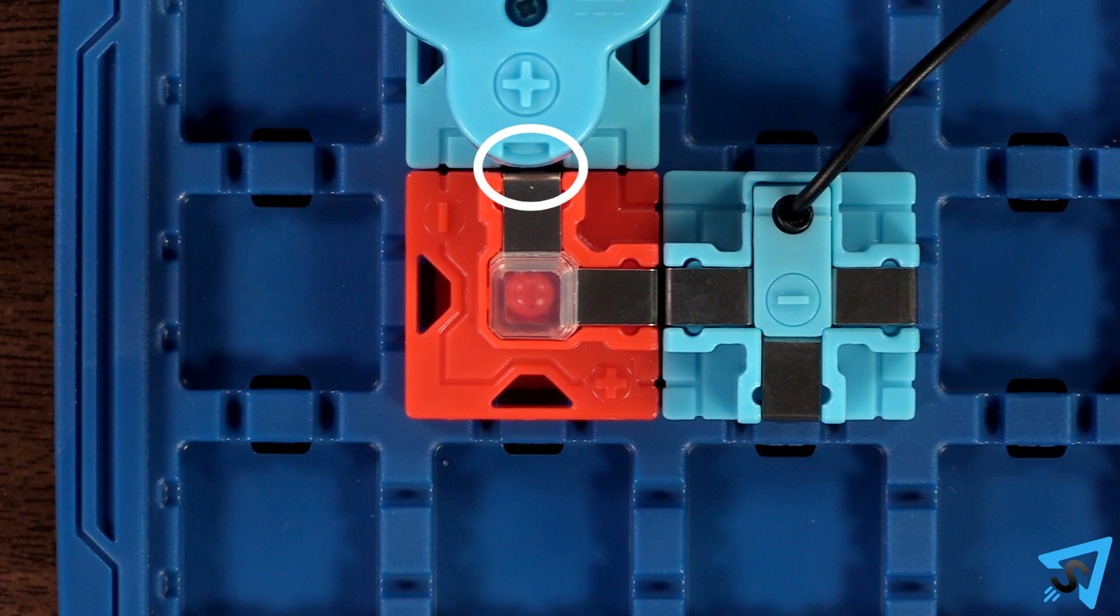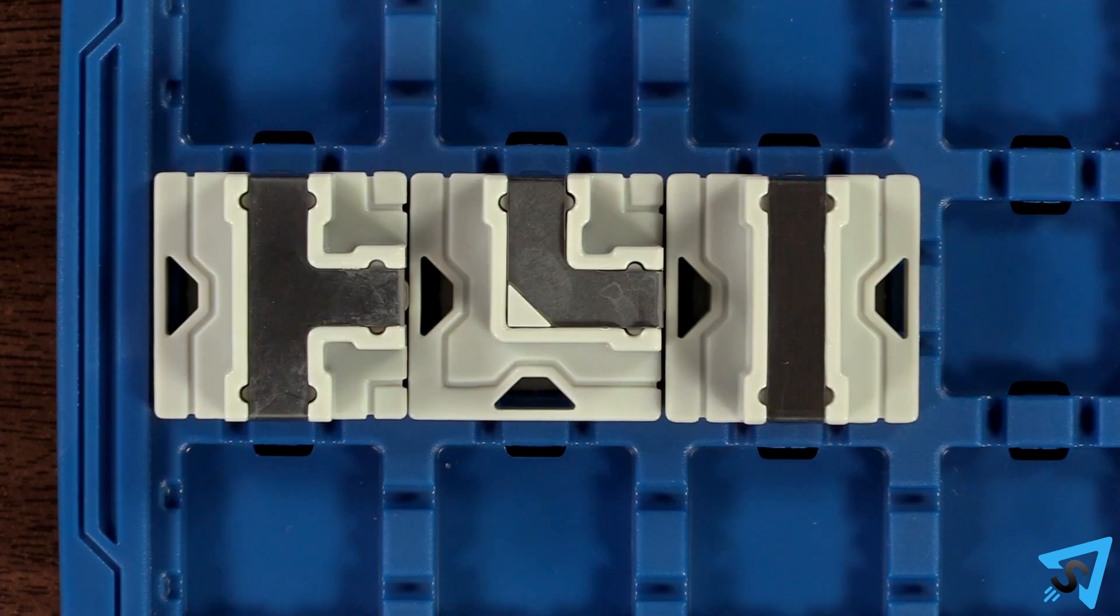If that direction is correct, then the light will illumine. The gray tokens carry current along their metal strip in either direction, based on how they are oriented.